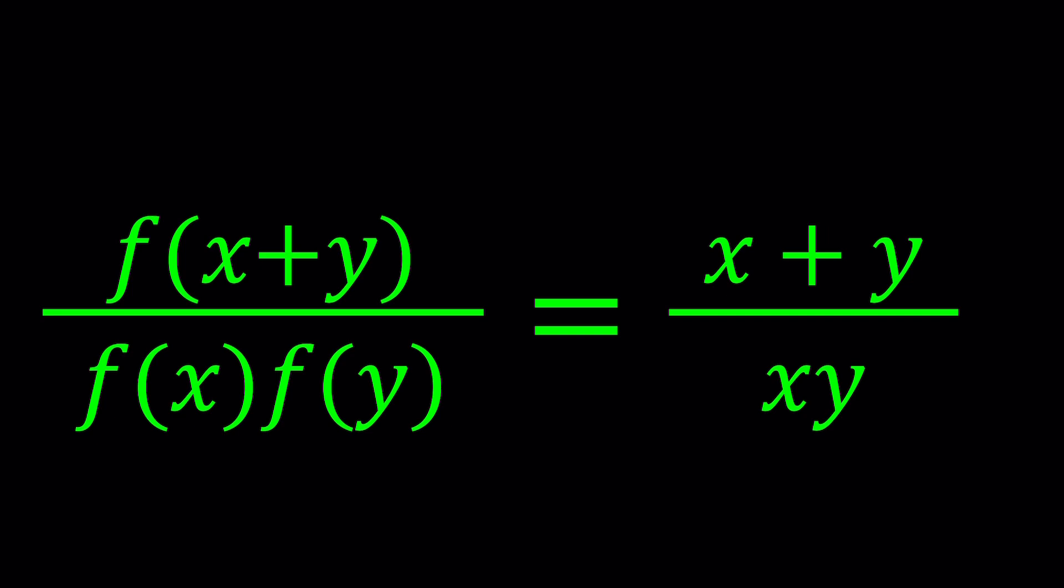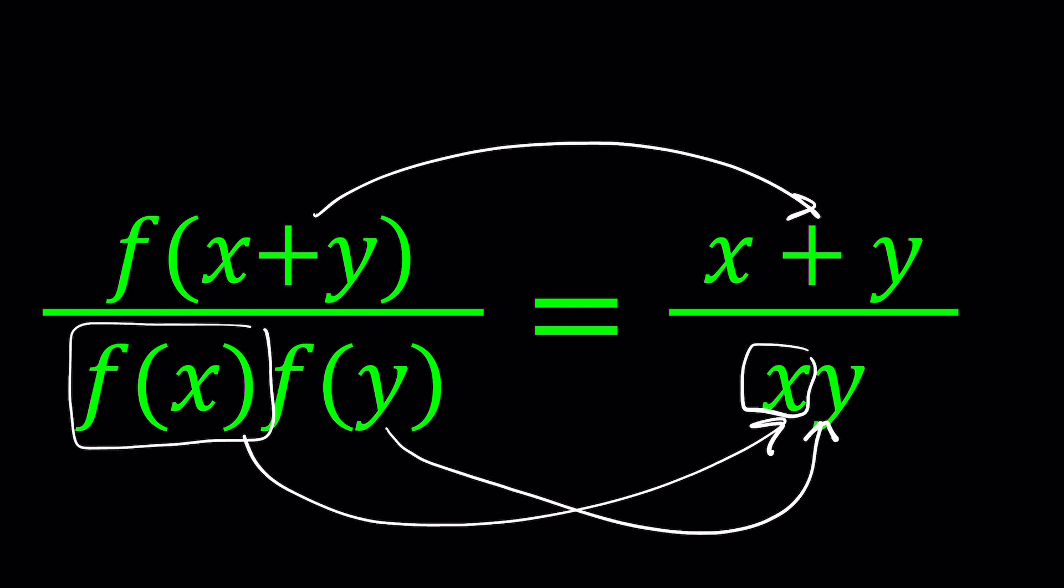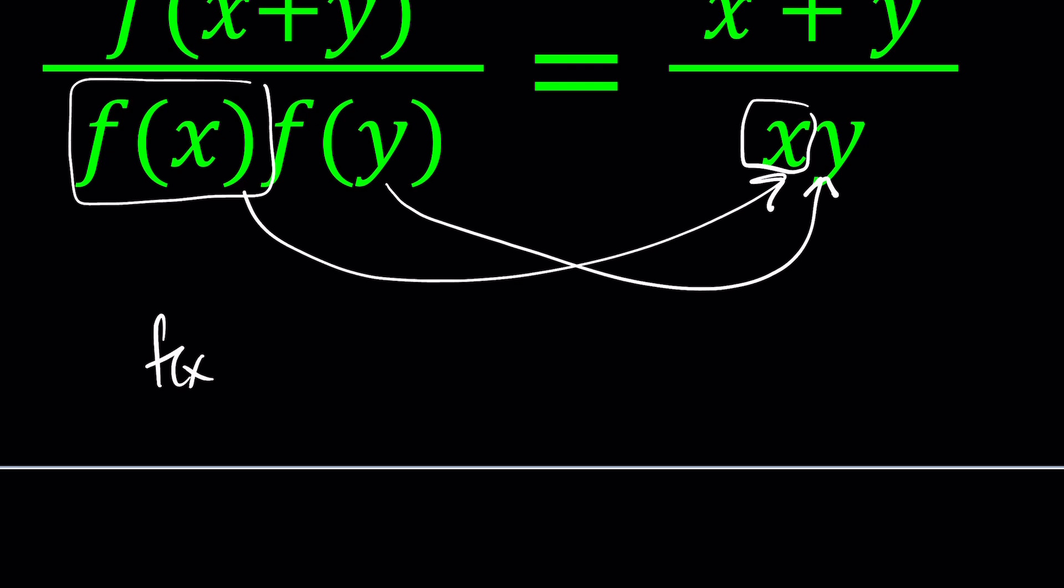When you see the correspondence like f of x plus y against x plus y and this product against that product, aren't you thinking that f of x, if f of x is equal to x, then this will work. Why? Because f of x equals x implies f of y equals y, which is good. And it also implies f of x plus y equals x plus y. Because if f of x is x, in other words, the identity function, kind of like the one in multiplication or zero in addition, even though they're not exactly the same, but they're both identity elements.